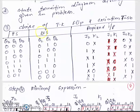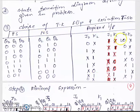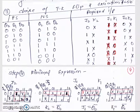The excitation table has present state, next state, and because we have 3 flip-flops, we need 3 input pairs: J0, K0, J1, K1, J2, K2. In terms of present state and next state, this gives the J1 and K1 values and so on.